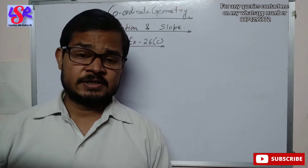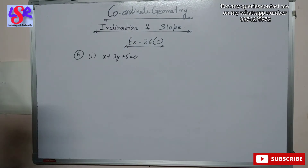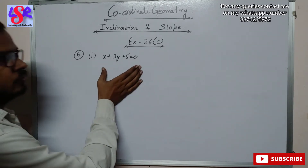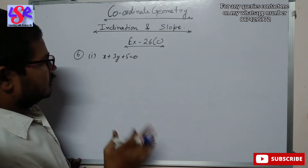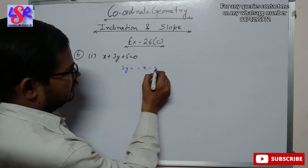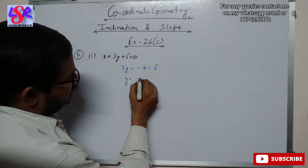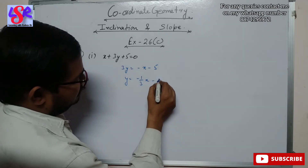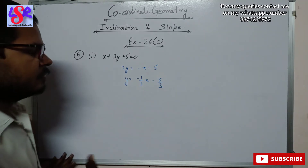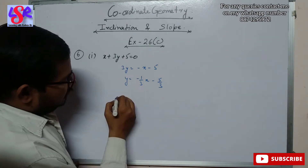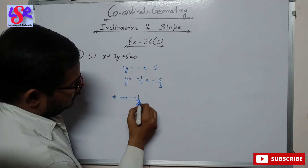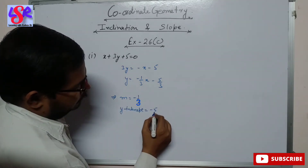Now let's begin with exercise 26c, question number 6. Here we have to find the slope and y-intercept of the equation. First, we need to get it into y equals mx plus c form. We separate 3y, so it becomes 3y equals minus x minus 5, or y equals minus 1 upon 3 times x minus 5 upon 3. Comparing with y equals mx plus c, we get slope equals minus 1 upon 3 and y-intercept equals minus 5 upon 3.